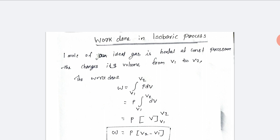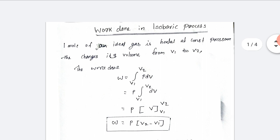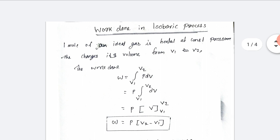Work done is equal to P into (V2 minus V1). This is the work done in the isobaric process.